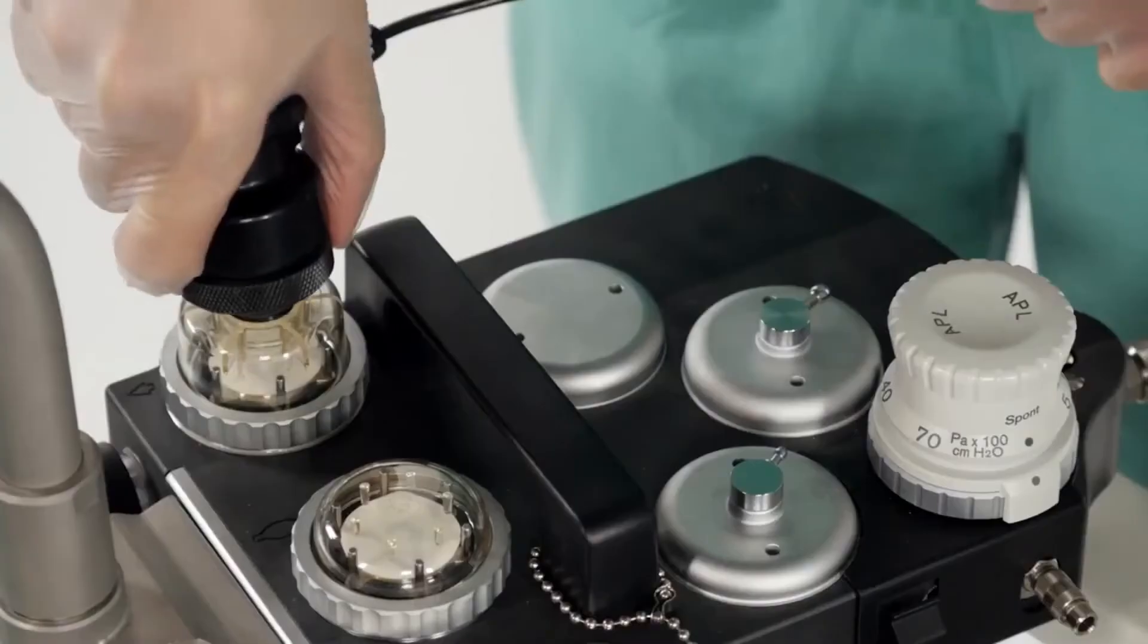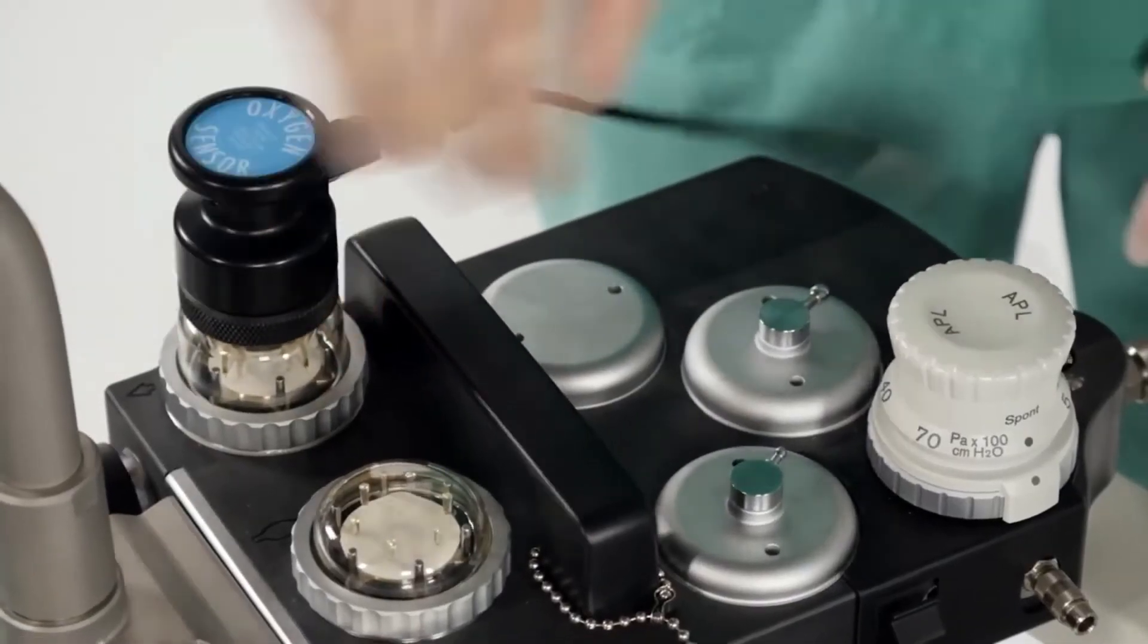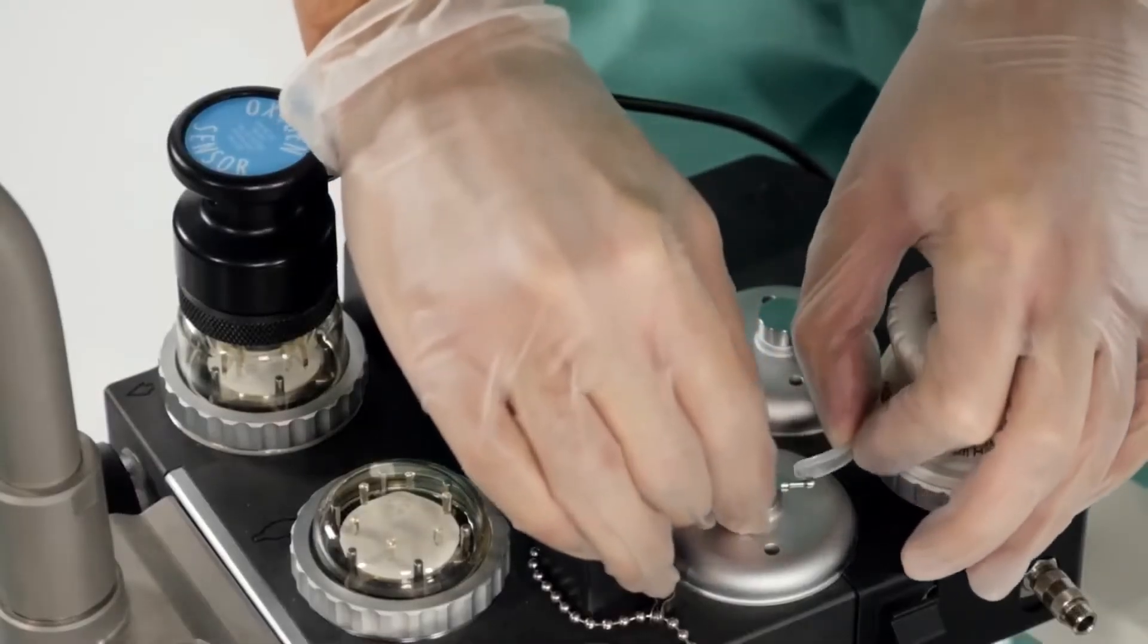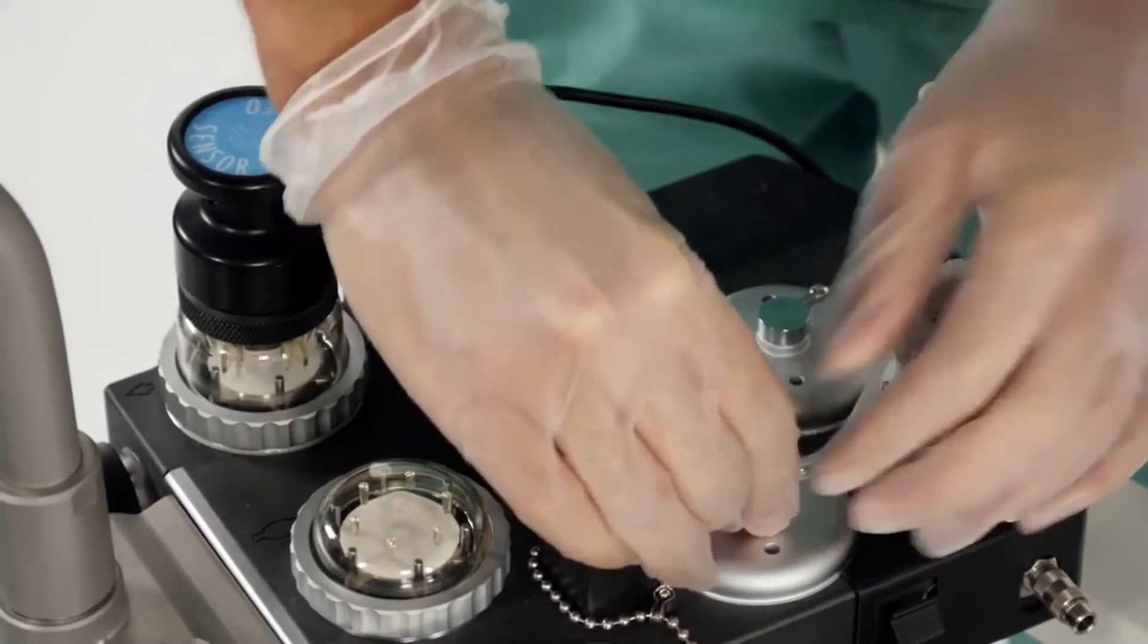Push the oxygen sensor into the opening of the inspiratory port. Plug the control hoses into the connection port on the PEEP PMAX valve and APL bypass valve.